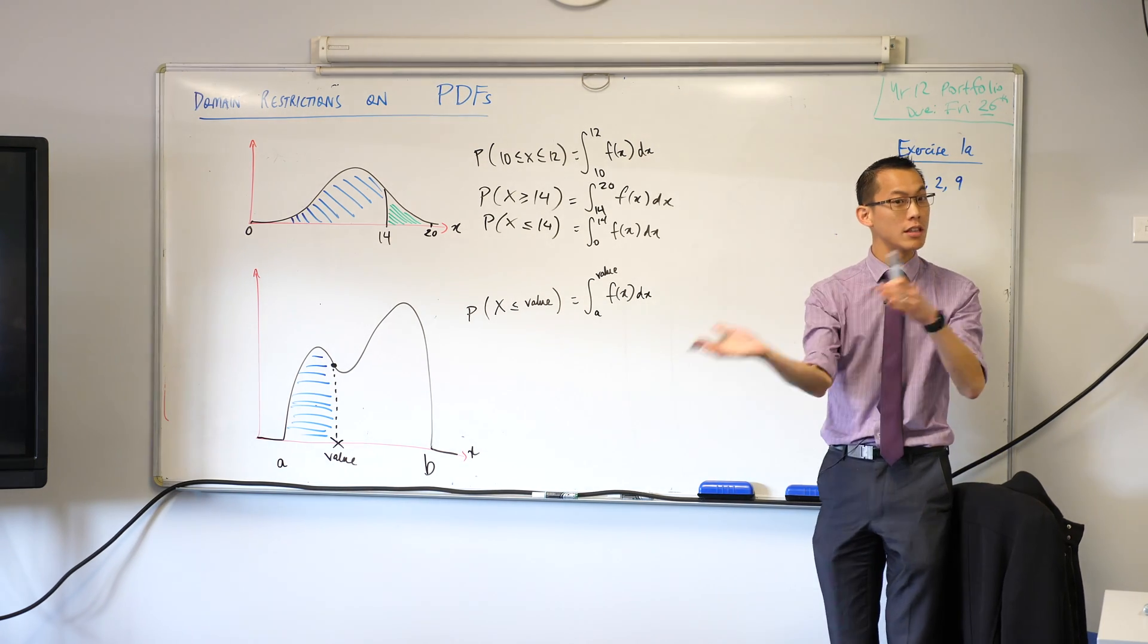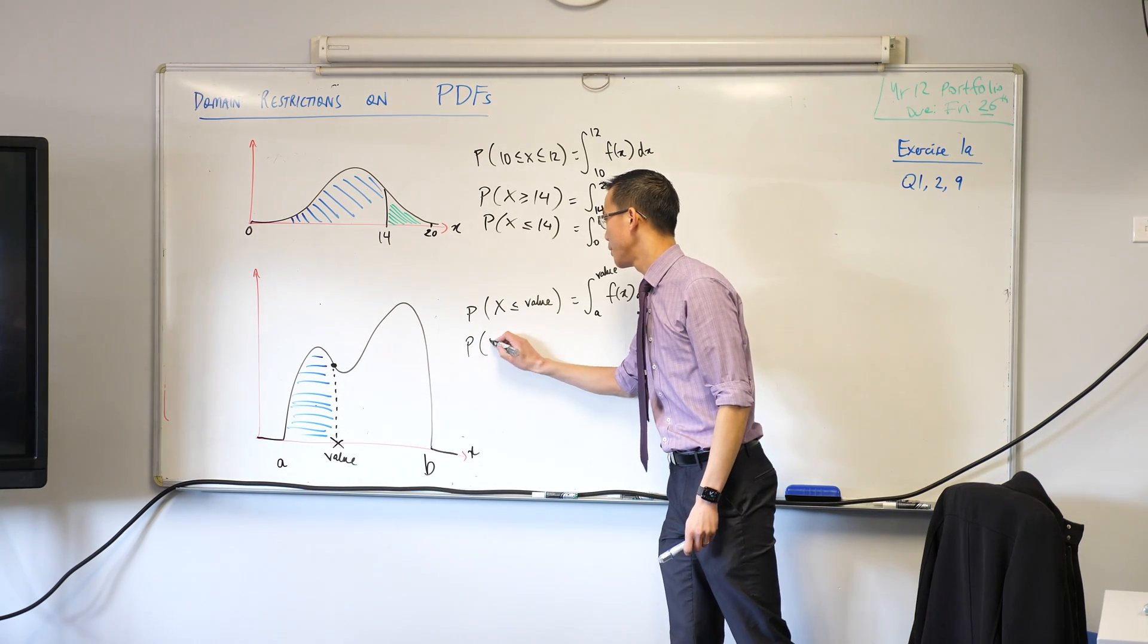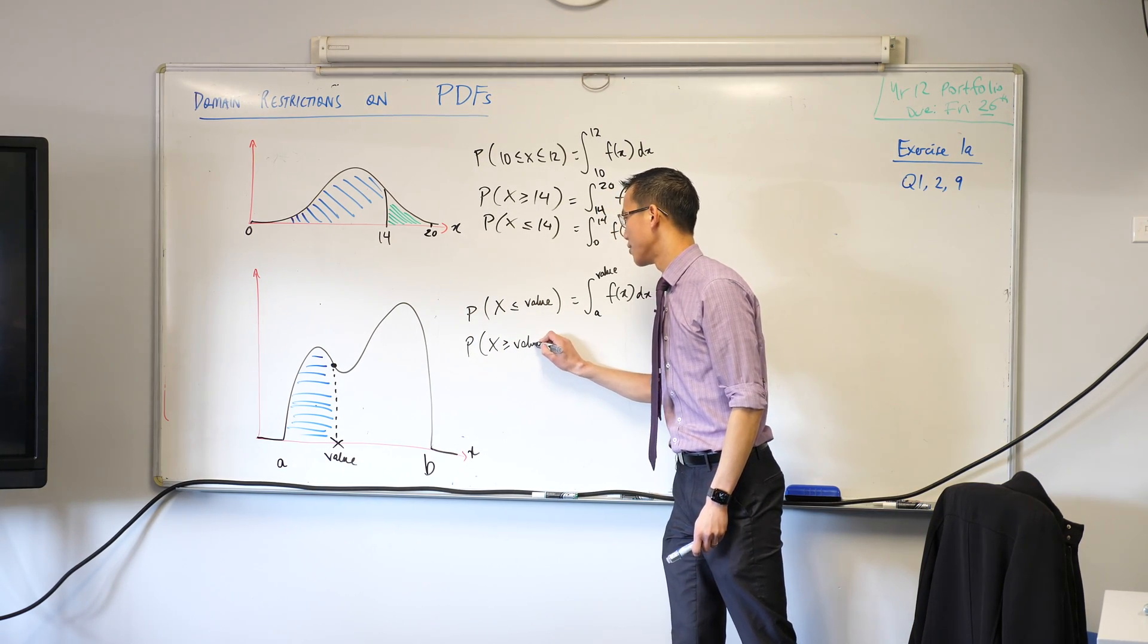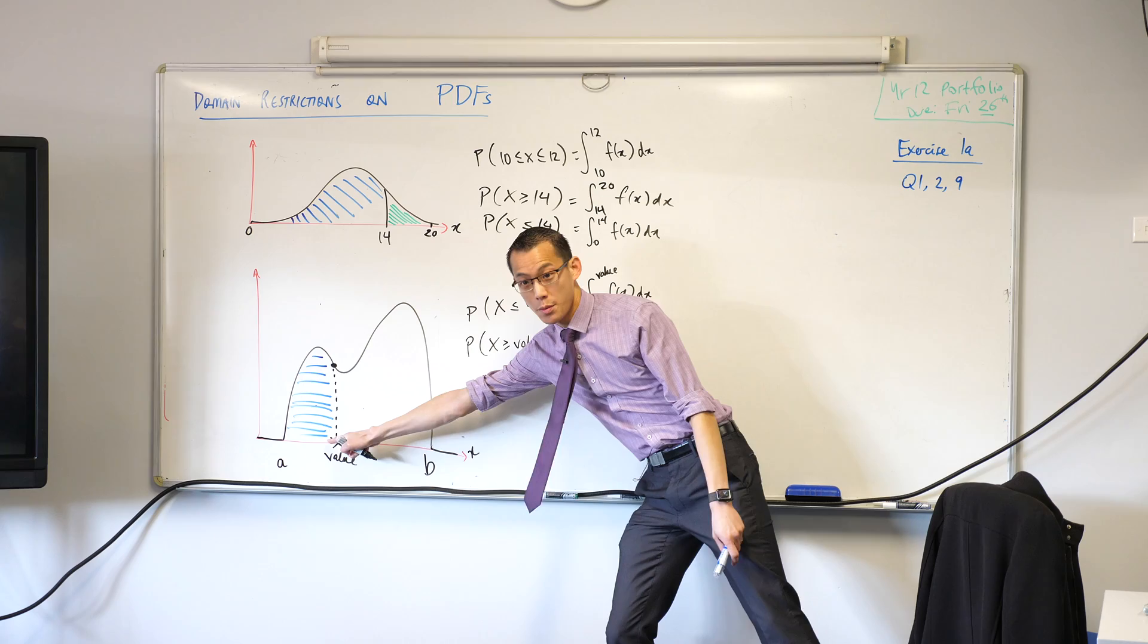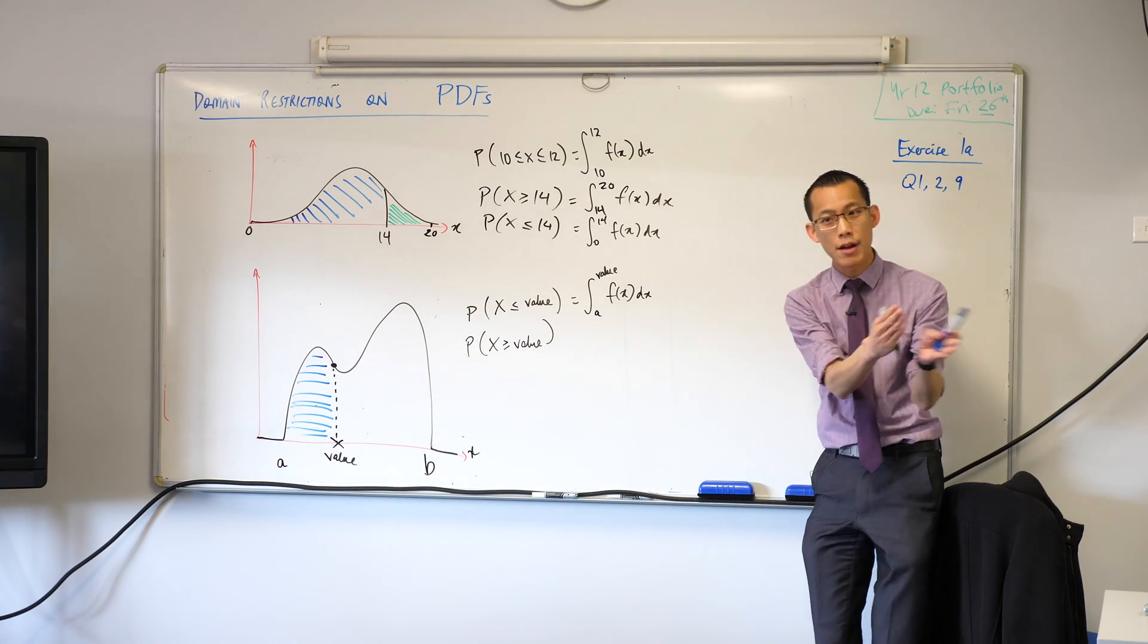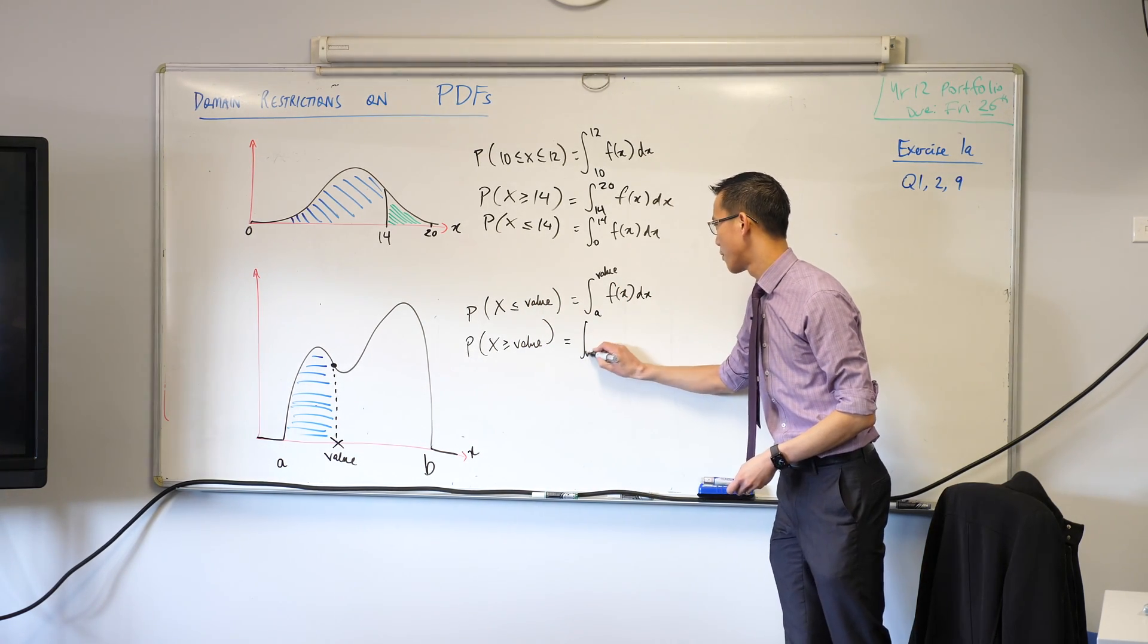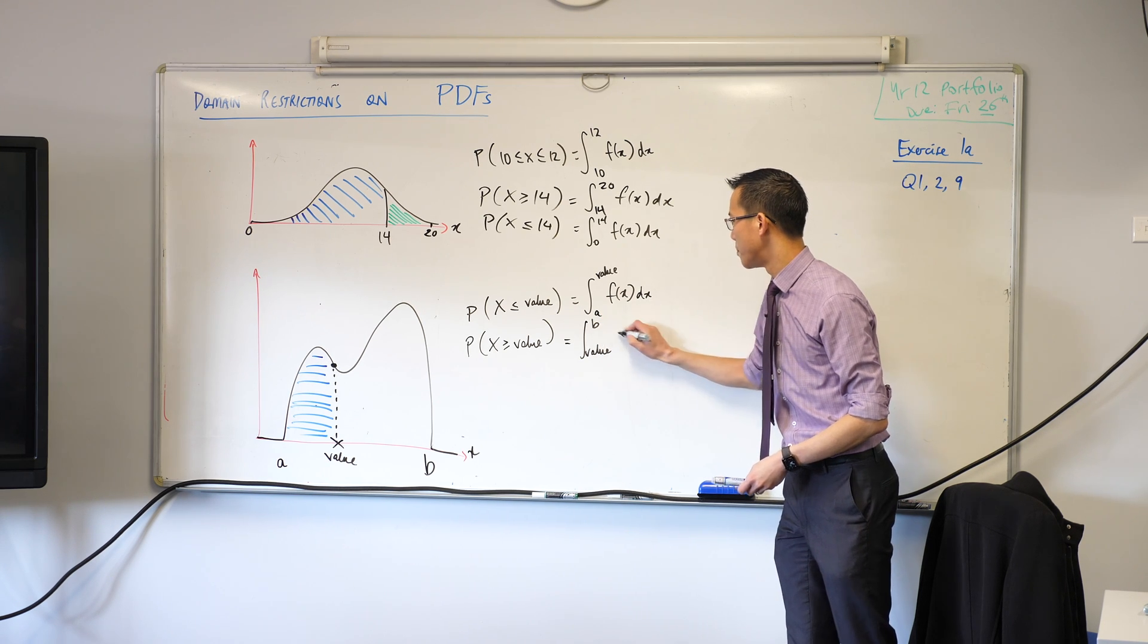In exactly the same way, what if I looked at the other side? What if I wanted the probability of being above that value? Yeah, fantastic, I'm starting from the value, and I'm going to the right, but I don't just go forever. I just stop at a point. So it's from the value up to b.